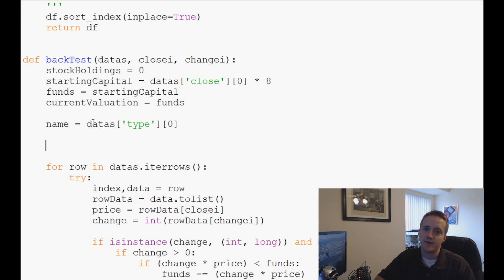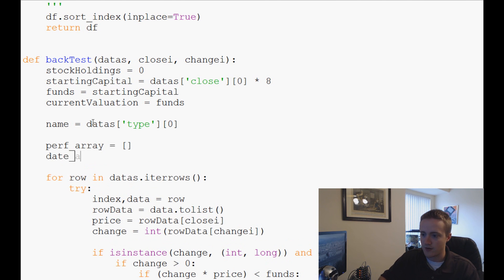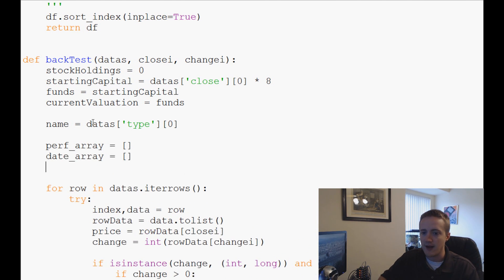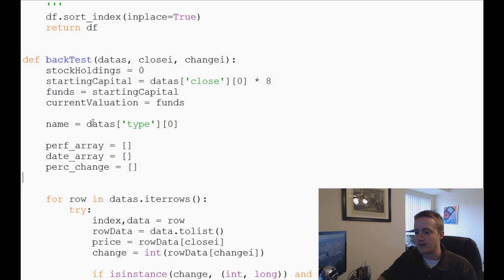Then what we want to do is we're going to save a performance array. We're going to save a data array, and then we're going to save a percentage change array, and then we're going to have this all written to a file. So for now, we'll just do this perf_array equals empty, date_array equals empty, perc_change equals empty. And actually, I call these all arrays, they're going to be just Python lists.